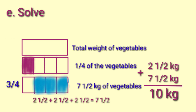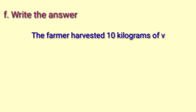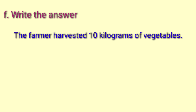So two and one half kilograms plus seven and one half kilograms equals 10 kilograms. The final answer is: the farmer harvested 10 kilograms of vegetables. This is how to solve non-routine problems. In this problem, you can use other methods to get the same answer. That's all for this video. I hope you learned from it. See you next time. God bless.